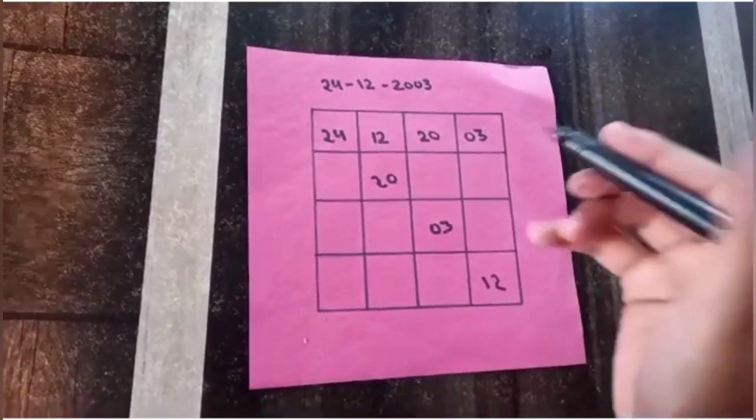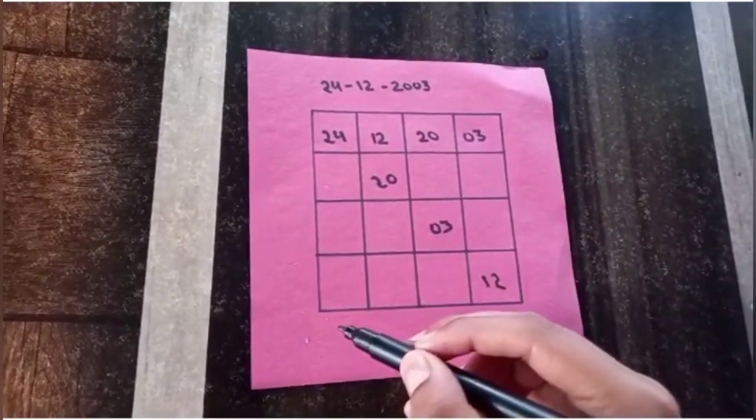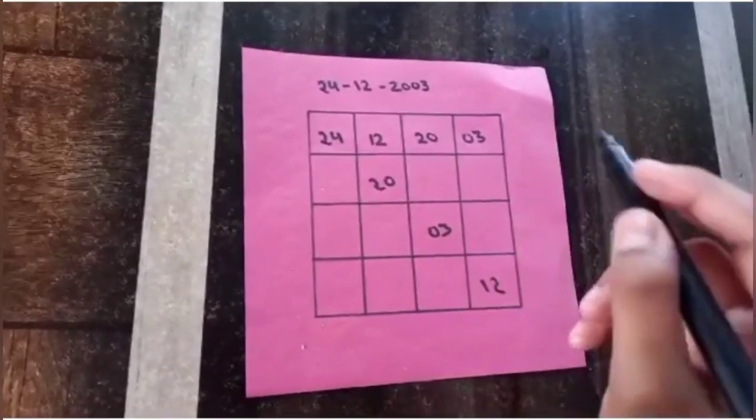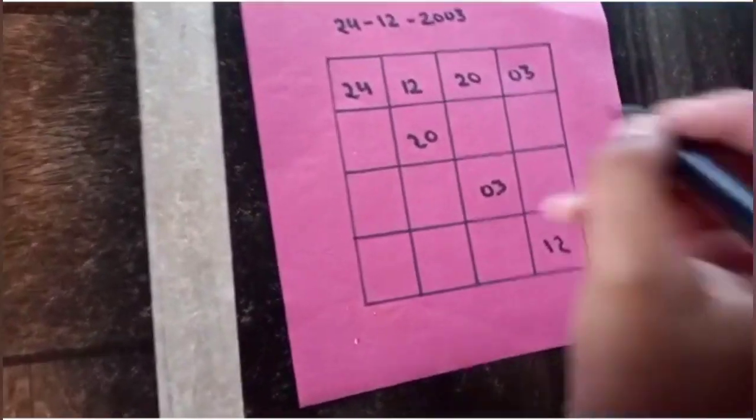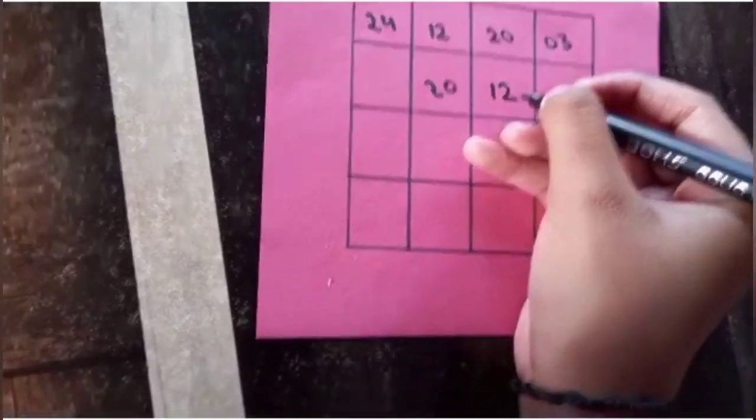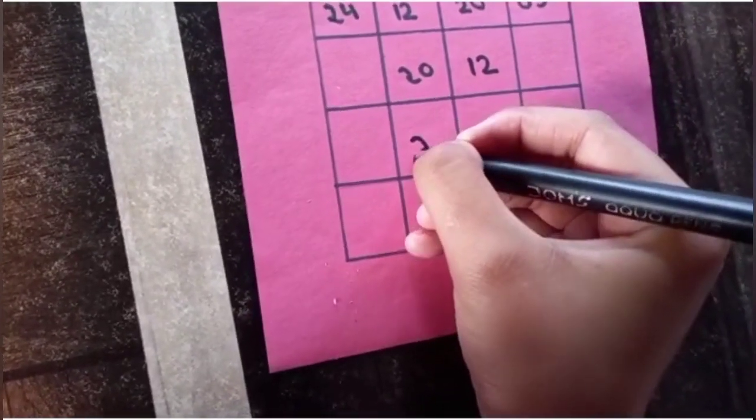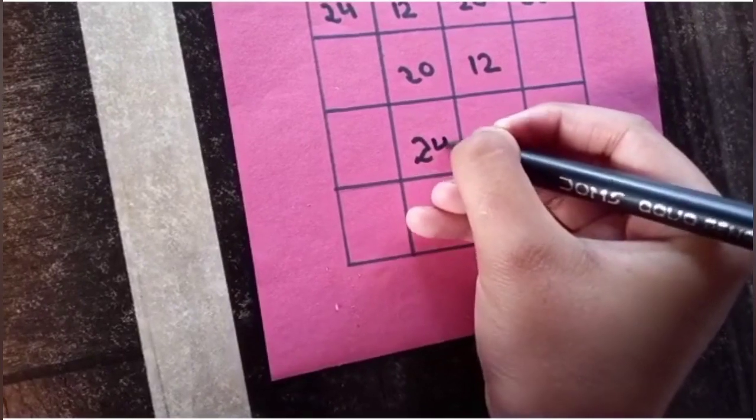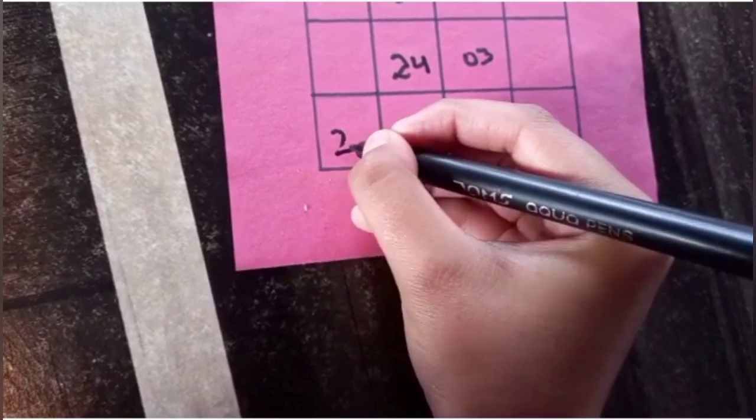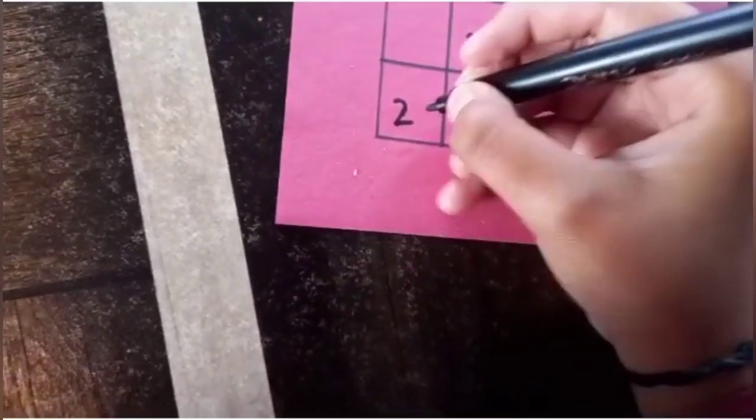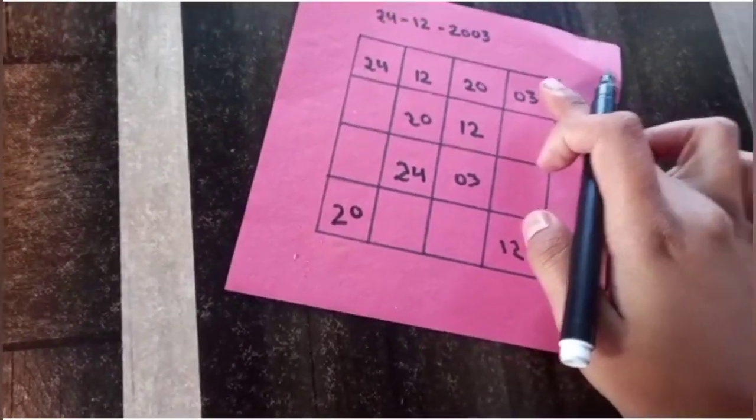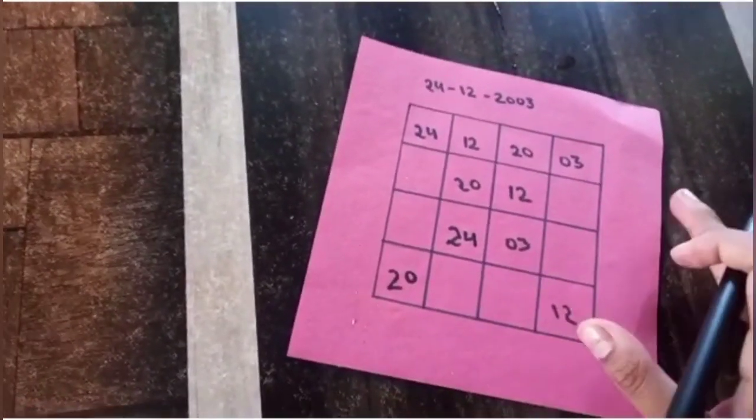Now, again, we have to fill this diagonal also in such a way that it should sum up to 59 with these four numbers only. Let's try it with 12. Let's write 24 over here and 20. So, if we will calculate the sum of this diagonal, it will also sum to 59.